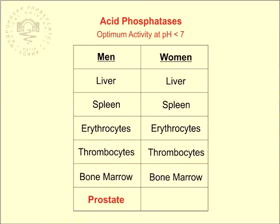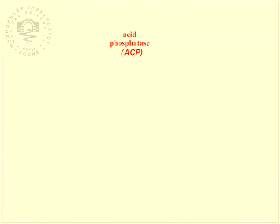In men, about half of the total activity of the acid phosphatase in the serum is due to the prostate, and the rest is due to the liver, the thrombocytes, and the erythrocytes. In women, serum activity is due predominantly to the liver, the thrombocytes, and the erythrocytes.